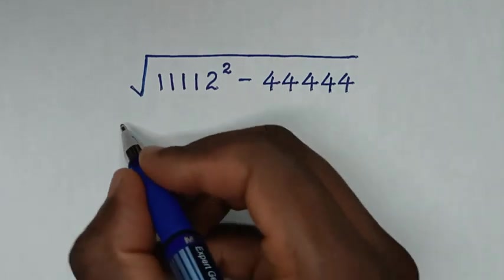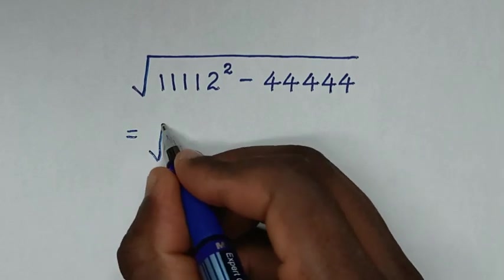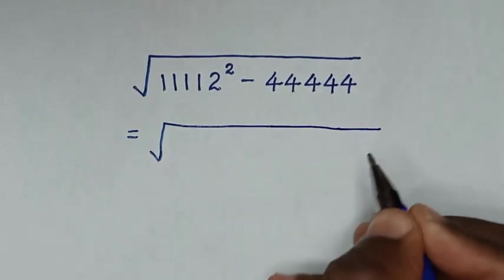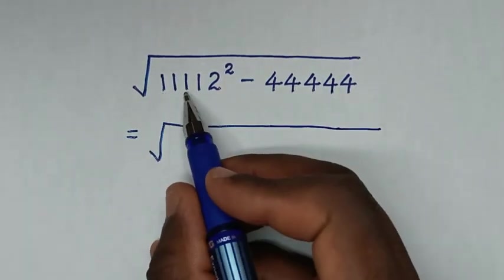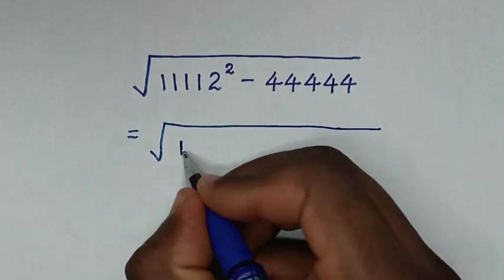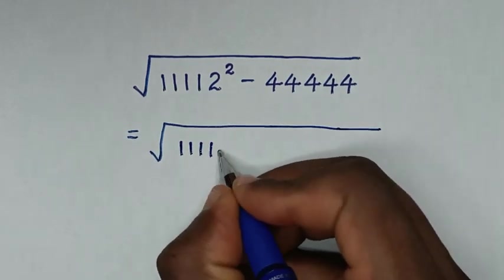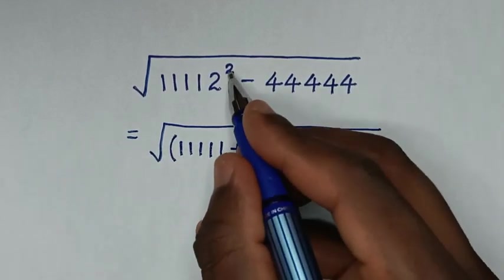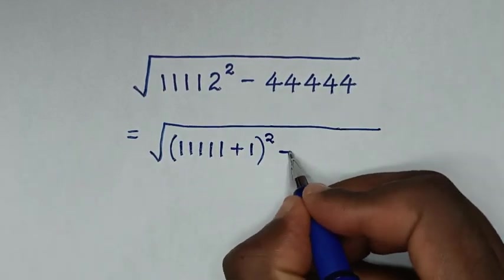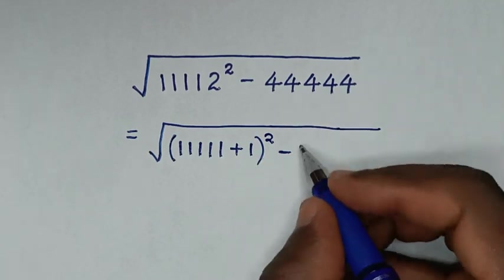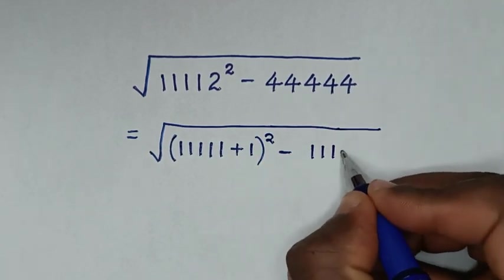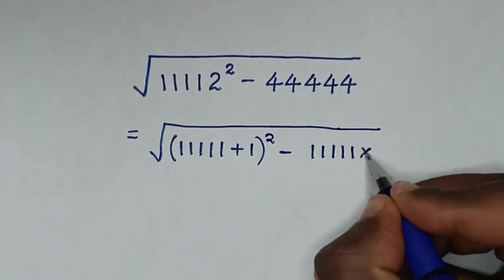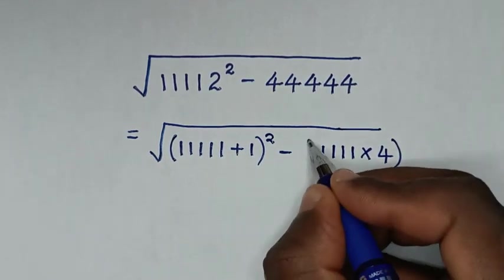So, it will be equal to square root of 11112, which is the same as 11111 plus 1, then bracket this squared. Then minus 44444, which is the same as 11111 times 4.